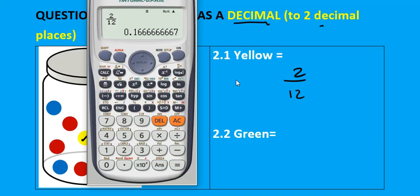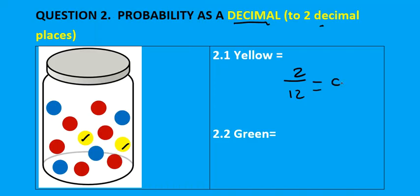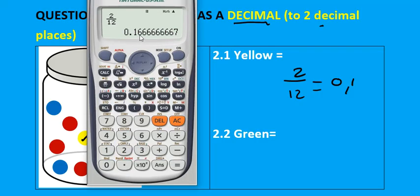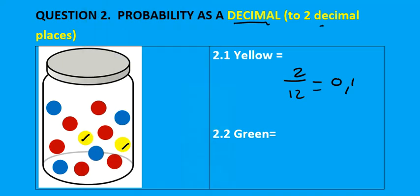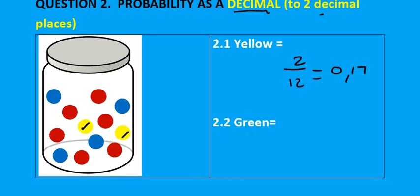The calculator gives you 0.1666..., and we have to simplify to two decimal places. The six will be rounded up to seven because the next digit is more than four, giving 0.17. The next question asks: what is the probability of getting a green marble? We do not have any green marbles, so that probability is zero.